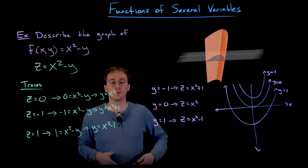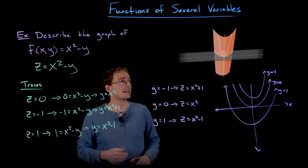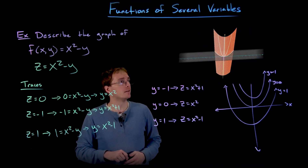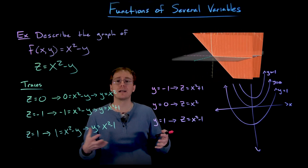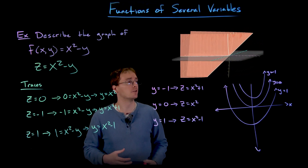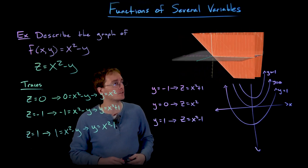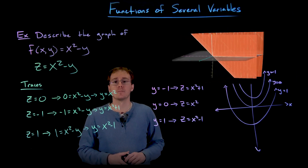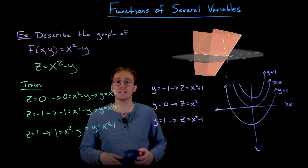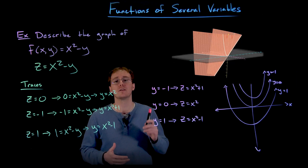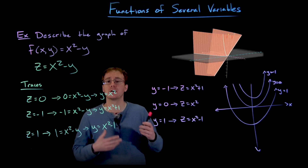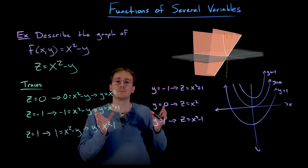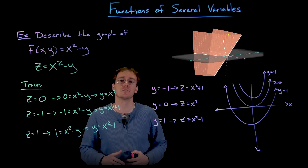In GeoGebra, we can set z, y, or x equal to zero and see where those planes intersect our three-dimensional surface. Stacking all these traces together creates a wire skeleton for our three-dimensional surface. When we look at the complete surface, what we really see is like a parabolic slide — technically, we can think of this as a parabolic cylinder. This is a cylinder made up of a bunch of shifted parabolas, where the parabolas are shifted along the line z equals negative y.